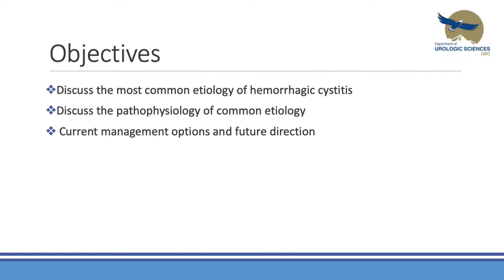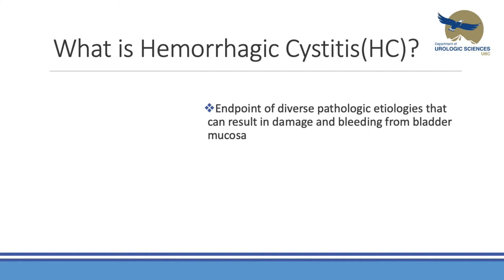The bulk of my talk I want to focus on the management options and basically, hopefully by the end of the talk, come up with a loose algorithm of what we can follow when we have these patients that come in with very challenging presentations. Loosely termed, hemorrhagic cystitis is the endpoint of any pathologic etiology that can cause damage to the bladder and bleeding from the mucosa.